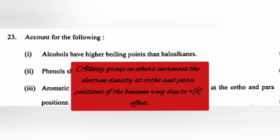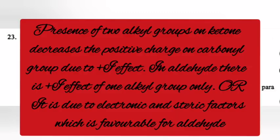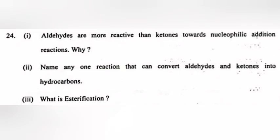Answer Part 3: Alkoxy group in ethers increases the electron density at ortho and para positions of the benzene ring. Presence of two alkyl groups on ketone decreases the positive charge on carbonyl group due to +I effect. In aldehyde, there is +I effect of one alkyl group only, or it is due to electronic and steric factors which is favorable for aldehyde.